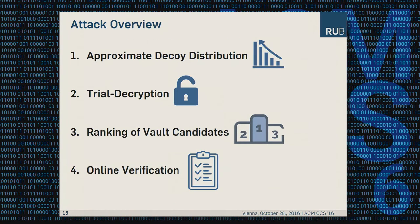Our attack consists of four steps. First, we approximate the distribution of decoys from NoCrack. Then we trial-decrypt the cracking-resistant vault. We rank the candidates we get — we don't know whether it's a real vault or a decoy. Then we do online verification to check whether our ranking is successful.